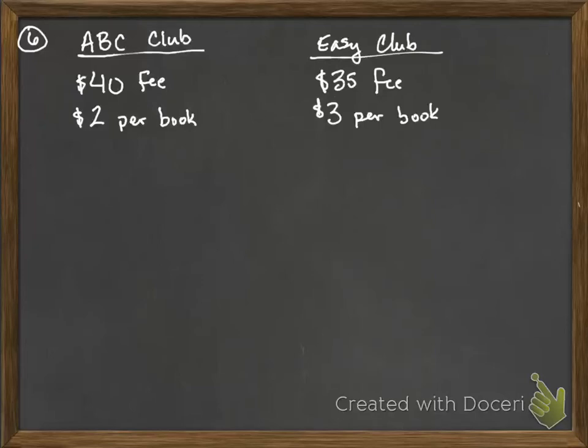All right, so question six says that the ABC book club charges $40 monthly fee and $2 per book to read in that month. The Easy book club charges $35 monthly fee and $3 per book to read in that month.